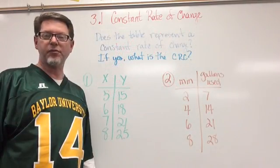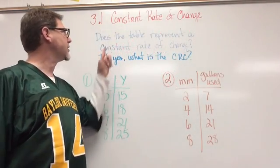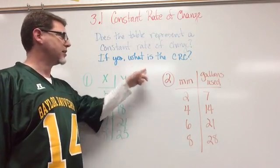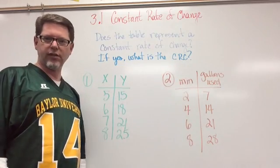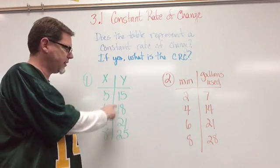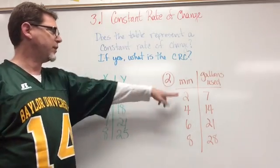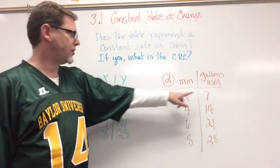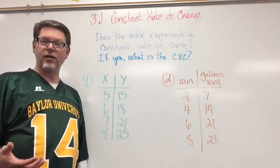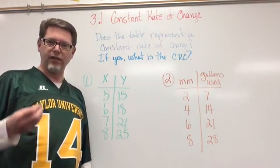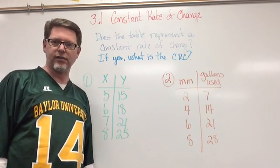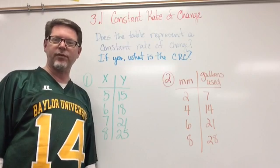Okay, here are your practice problems for tonight. The instructions say, does the table represent a constant rate of change? If yes, what is the constant rate of change, or CRC? Number 1, here's my table. 5, 6, 7, 8, 15, 18, 21, 25. Number 2, minutes and gallons used, 2, 7, 4, 14, 6, 21, and 8, 28. See if they are a constant rate of change. If no, just put no. If yes, put yes, and then tell me what the constant rate of change is. Take a picture of your practice problems and submit them through Edmodo.